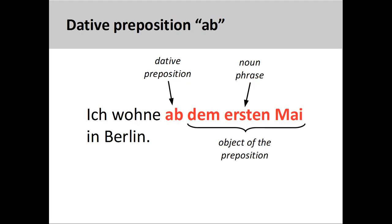The preposition ab can be used to indicate the point in time after which a certain activity starts. For example, ich wohne ab dem ersten Mai in Berlin — I am living in Berlin starting the 1st of May. In this and all following slides, I will indicate both the dative preposition and the object of this preposition, both of which make the dative prepositional phrase.